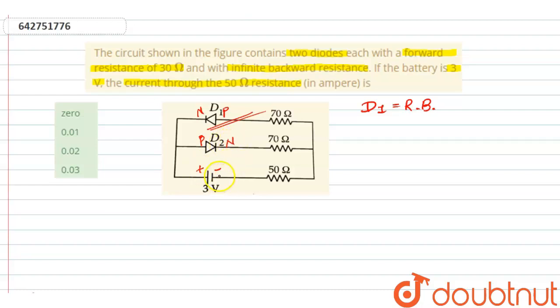We know for reverse biased, resistance will be infinite. The question also says infinite backward resistance, so here R will be infinite. And for forward bias, resistance is 30 ohm, we can say R dash, so this is 30 ohm.